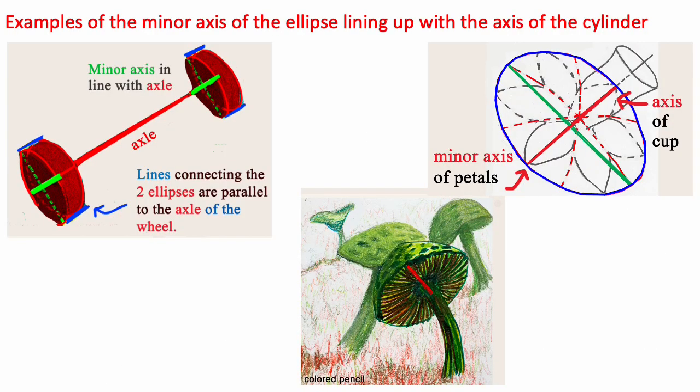Here are some examples of the minor axis of the ellipse lining up with the axis of the cylinder. In this first one we have the minor axis of each ellipse aligning with the axle of the wheel. Notice also that the lines connecting these two ellipses are parallel to the axle of the wheel.